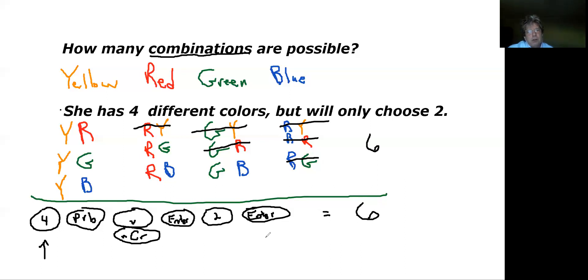So you hit the four, you find the PRB button, you find the nCr, hit enter, hit the two, hit enter again, and that'll give you the six combinations. So hopefully you'll find that helpful.